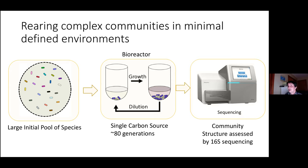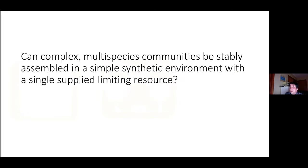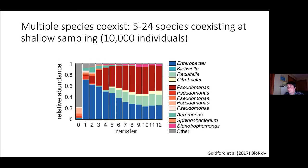At the end of every 48-hour period we use 16S community-level sequencing to take a census of what species are present and their abundance. We do this at the end of every 48-hour period on the ground community before we apply the bottleneck. The first question is: if you do this simple experiment in an environment with a single growth-limiting resource, will you get a community, or just a single species that outcompetes everybody?